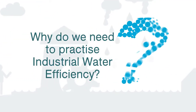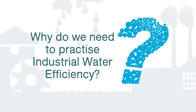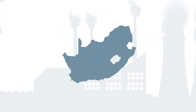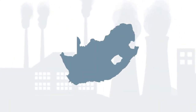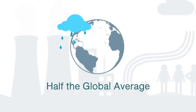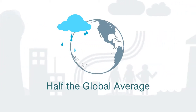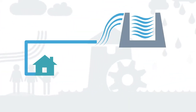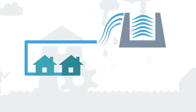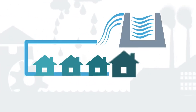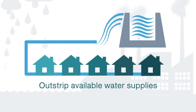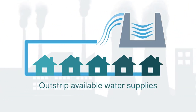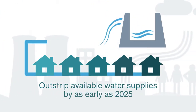Why do we need to practice industrial water efficiency? South Africa is a water-scarce country, receiving less than half the world average annual rainfall. The current increasing demand for water is projected to outstrip available water supplies by as early as 2025.